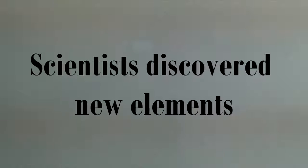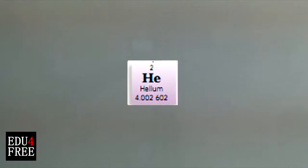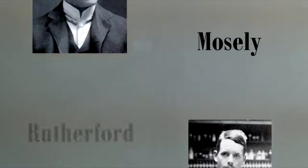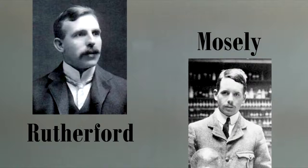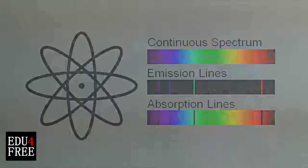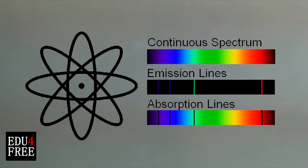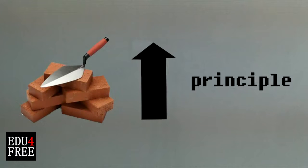As we can see, Mendeleev's table is very simple and there are even some elements which weren't discovered yet. Then scientists made contributions and new discoveries; new elements were discovered, like the contributions of Mosley and Rutherford, who were working on finding the atomic spectra, and also the contribution of the scientist Aufbau, who made the building-up principle.